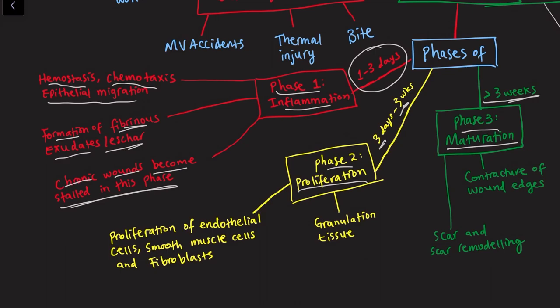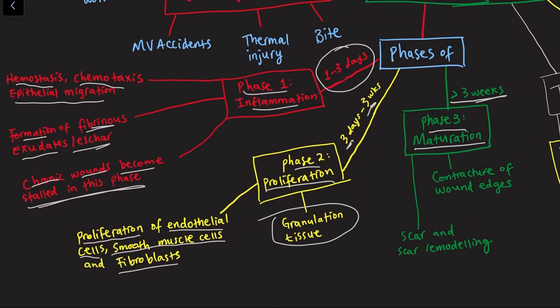The second phase of wound healing is the proliferation phase. During this phase, there is proliferation — an increase in number — of endothelial cells, smooth muscle cells, and fibroblasts. There is also formation of granulation tissue.